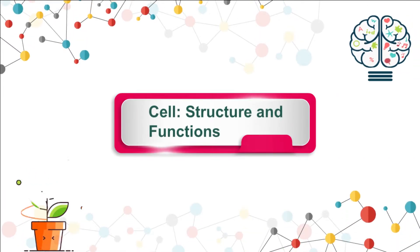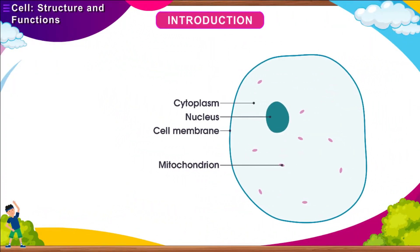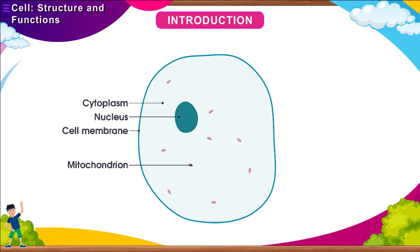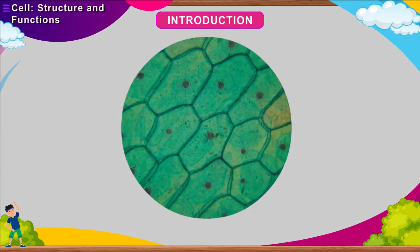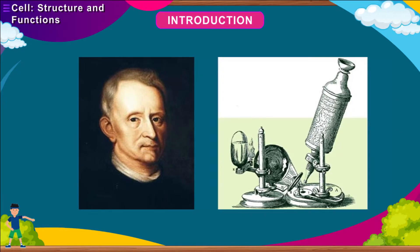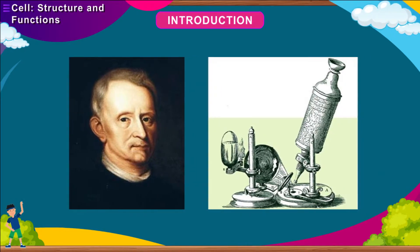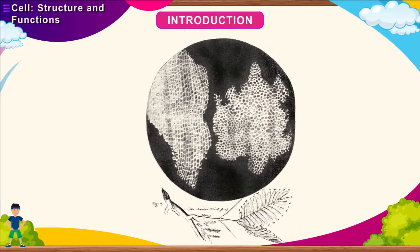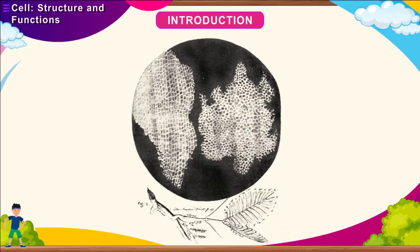Cell Structure and Functions. Introduction: A cell is the structural and functional unit of life. It forms the lowest level of organization called the cellular level. There are various types of cells. A cell cannot be viewed by the naked eye; it can be seen only through a microscope. The cells were first seen by Robert Hooke in 1665 on a piece of cork under his microscope. He observed that the cork was made up of many small boxes, and he termed these little boxes as cells.